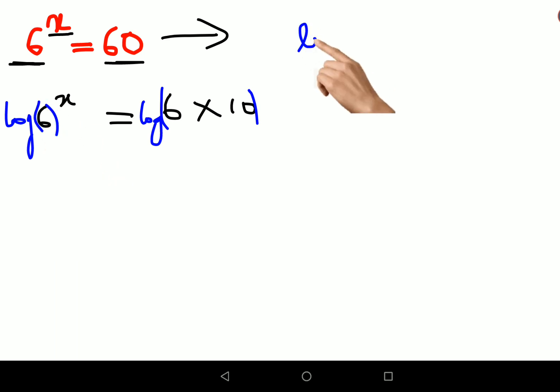So now log of a raised to m can be written as m log a. So this will be x log 6.